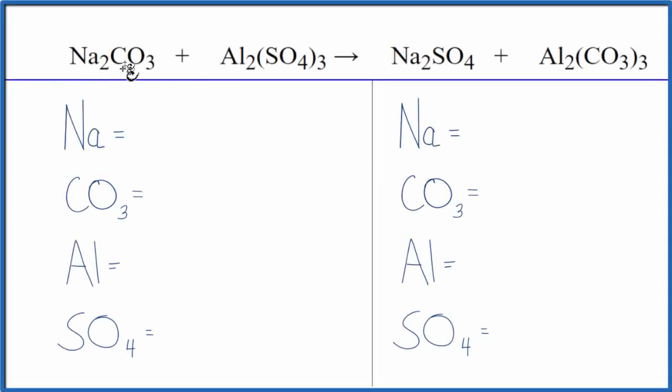In this equation we have Na2CO3 plus Al2(SO4)3, sodium carbonate plus aluminum sulfate. This is a double displacement reaction.